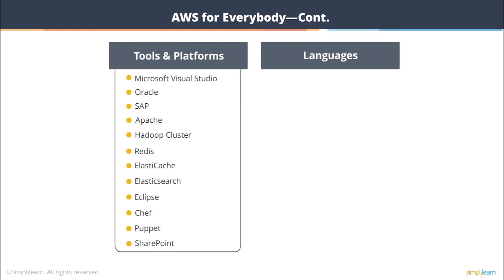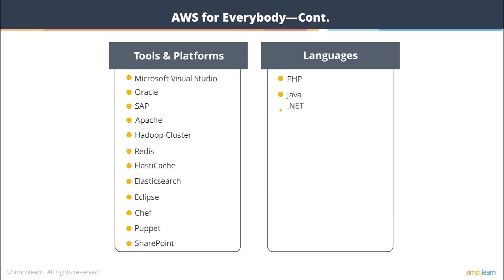The same goes for programming languages. Developers may wonder: does AWS have APIs, and how do I integrate with AWS services? AWS supports pretty much all major languages including PHP, Java, .NET, Python, Node.js, Ruby, C#, and JavaScript. AWS also provides SDKs for Android and iOS development. Rest assured that irrespective of the language or software you are working with, it will seamlessly integrate with AWS.